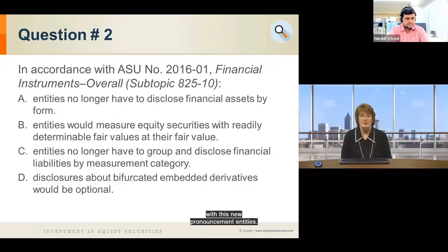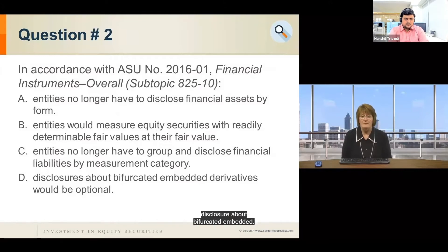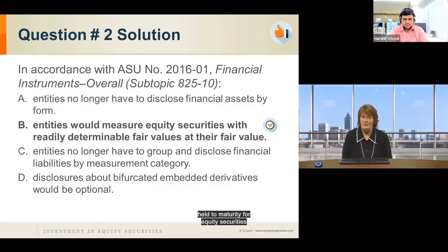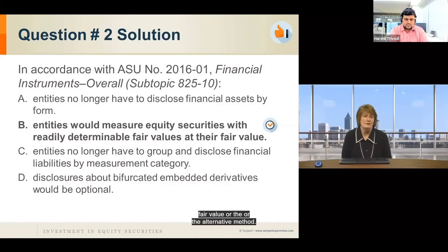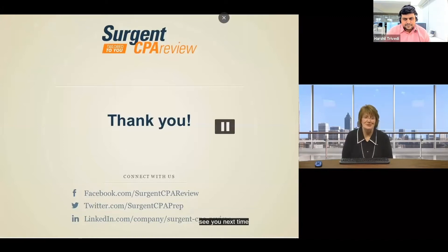For question two: entities are no longer required to disclose financial assets by form — that's not true. Entities would measure equity securities with readily determinable fair values at their fair value — that is true, and that is the best answer. The categories of trading, available for sale, and held to maturity for equity securities no longer apply. All equity investments are accounted for through fair value or the alternative method. That concludes our class today — thank you for joining, good luck studying, and we'll see you next time.